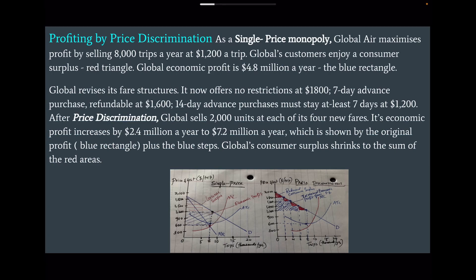Profiting by price discrimination: as a single-price monopoly, Global Air maximizes profit by selling 8,000 trips a year at $1,200 a trip. Global's customers enjoy consumer surplus shown by the red rectangle, and Global's economic profit is $4.8 million a year shown by the blue rectangle. After price discrimination, Global revises its fare structures offering: no restriction at $1,800, seven-day advance purchase refundable at $1,600, and fourteen-day advance purchase with minimum seven-day stay at $1,200. Global now sells 2,000 units at each of its four new fares, and its economic profit increases to $7.2 million a year, while consumer surplus shrinks.